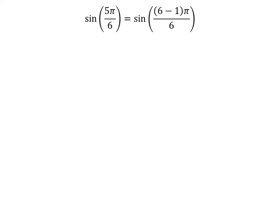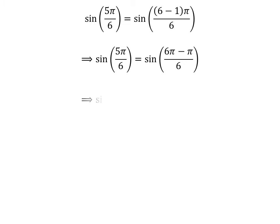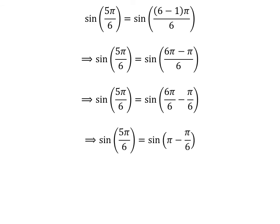Here is the second method. We know 5 is equal to 6 minus 1, so sine of 5 times pi upon 6 is equal to sine of 6 minus 1 times pi upon 6. Expanding the numerator, we get sine of 6 times pi minus pi upon 6. The fraction 5 times pi upon 6 can be expressed as the difference of two fractions: 6 times pi upon 6 and pi upon 6. Cancelling out the common factor gives us sine of 5 times pi upon 6 is equal to sine of pi minus pi upon 6.